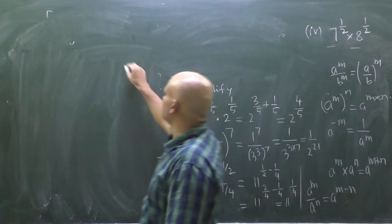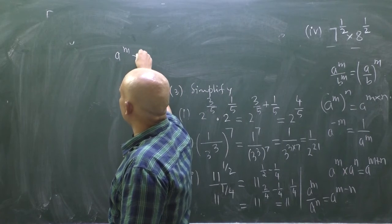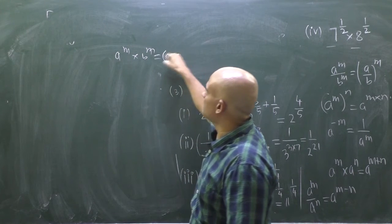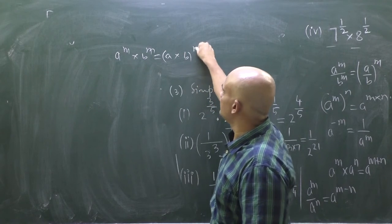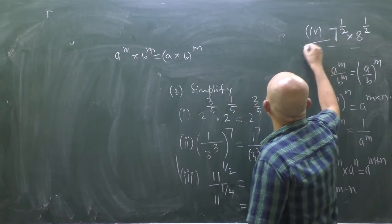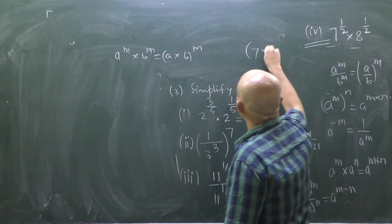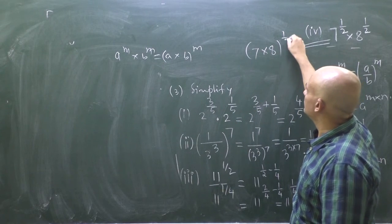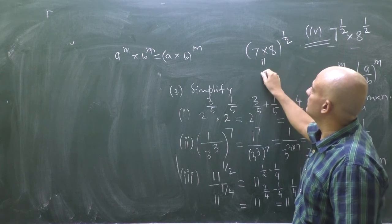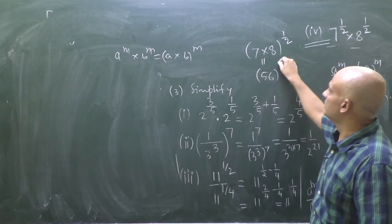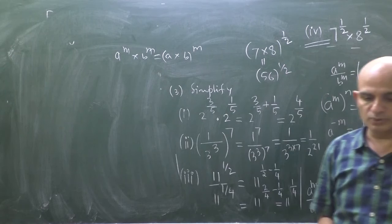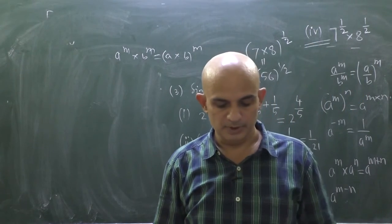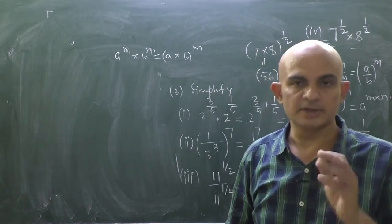For the last part, the bases are different but the powers are equal. We use the rule a^m × b^m = (a × b)^m. So it becomes 7 × 8, all to the power 1/2, which equals 56 to the power 1/2.